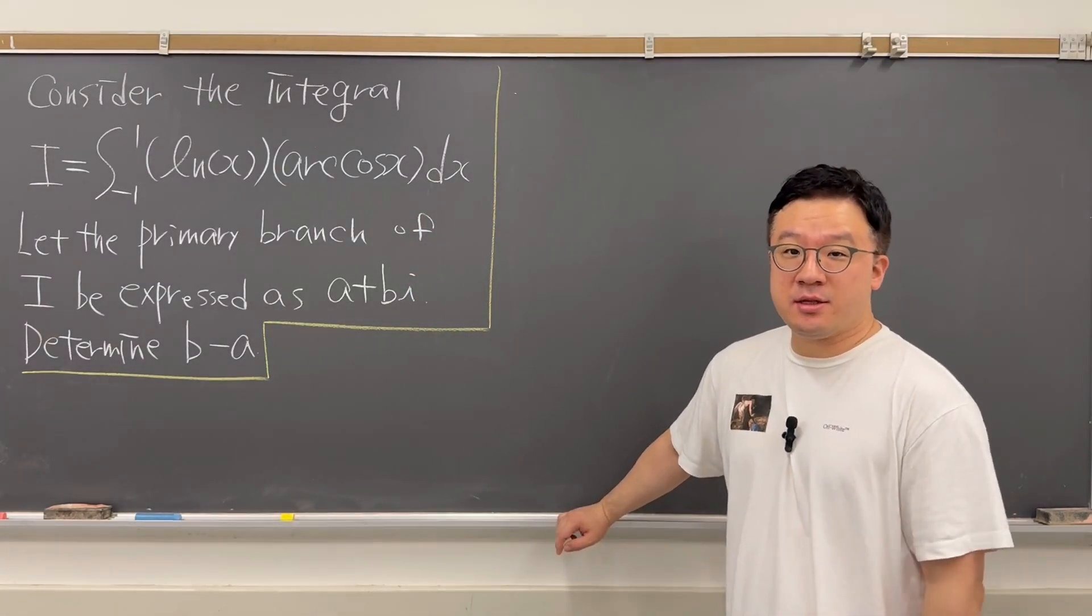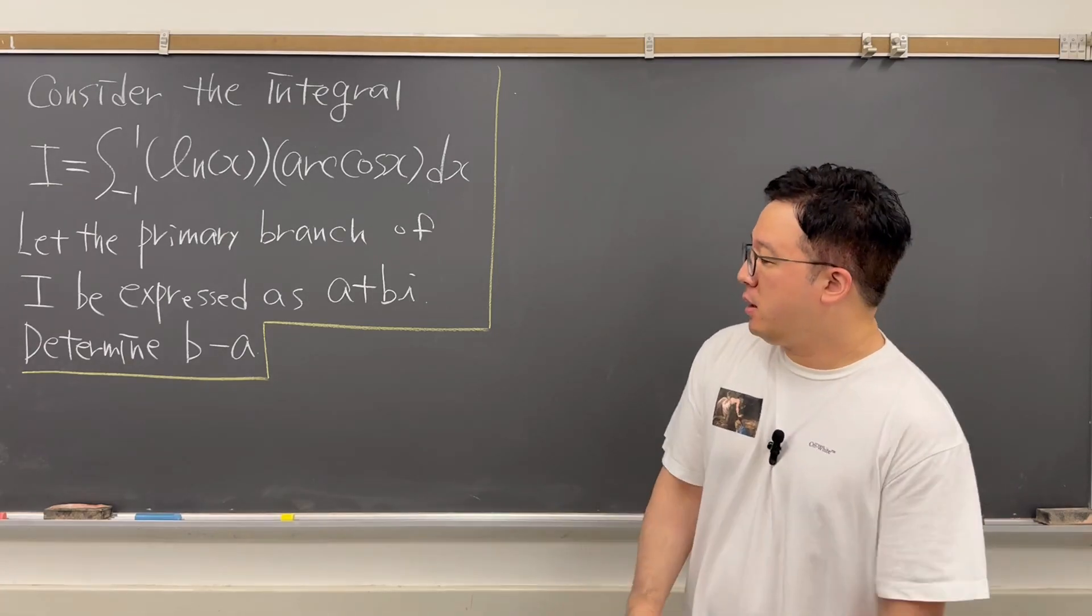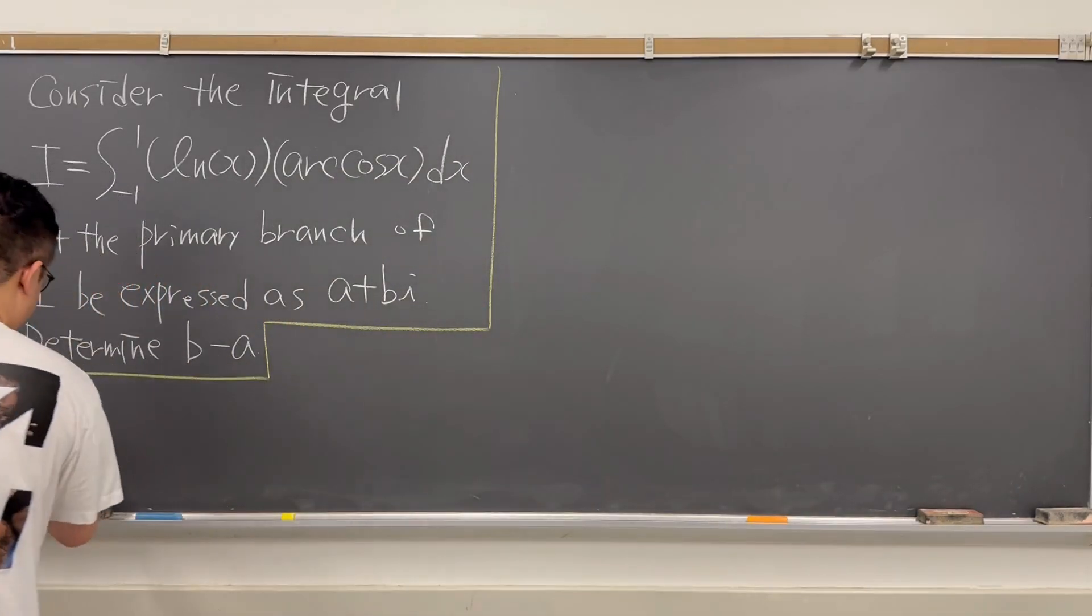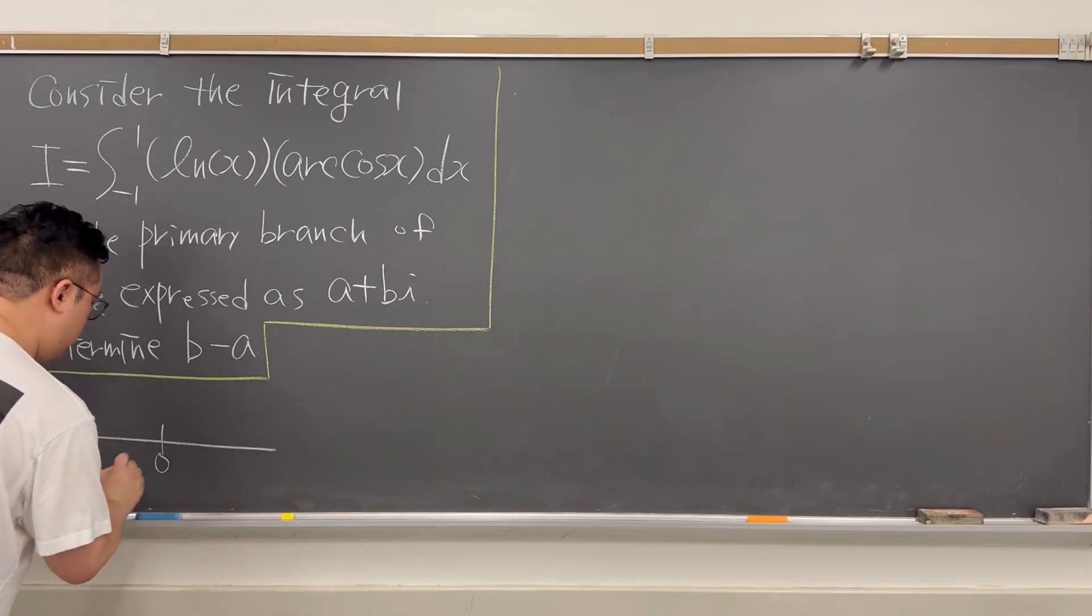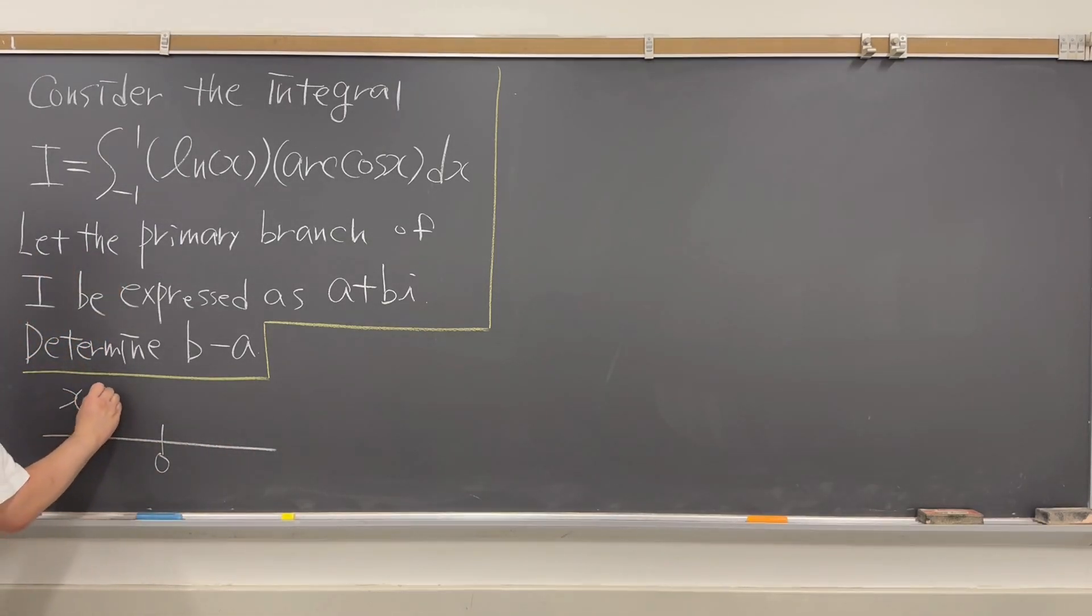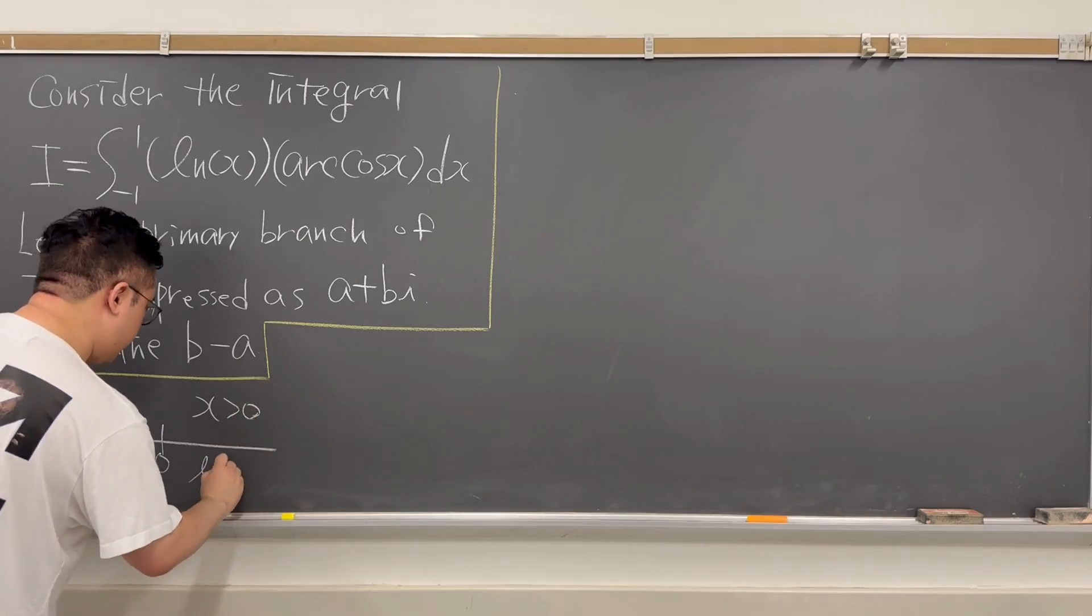Okay, then before we actually do anything, let's talk about the definition of ln(x) in terms of the principal value. Right, so let me make this simple number line. Okay, then this is zero. And then if your x is a negative number, we can represent this principal value of ln(x) as ln of the absolute value of x plus πi. And of course, if your x is a positive number, then ln(x) is just ln(x).